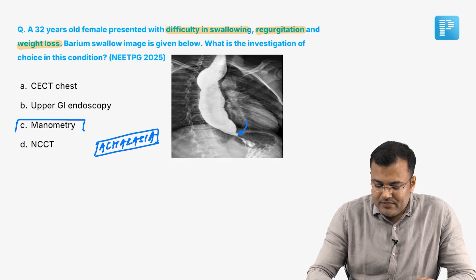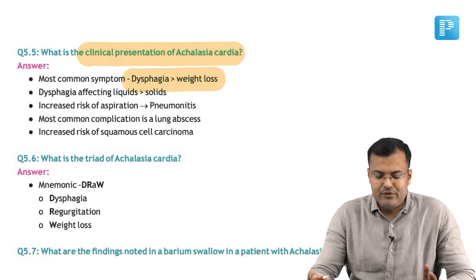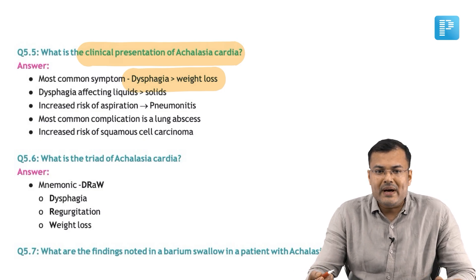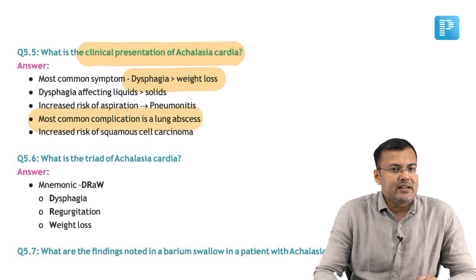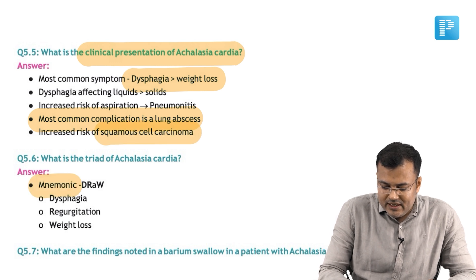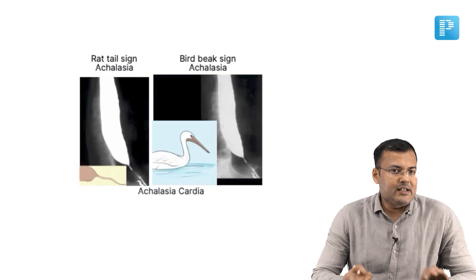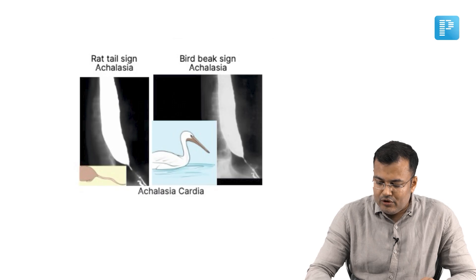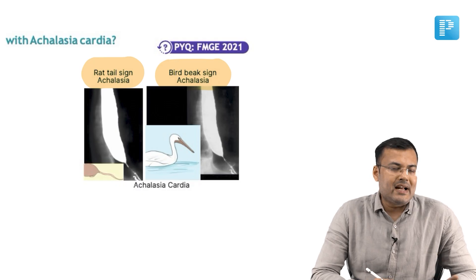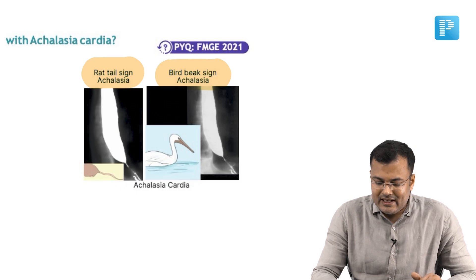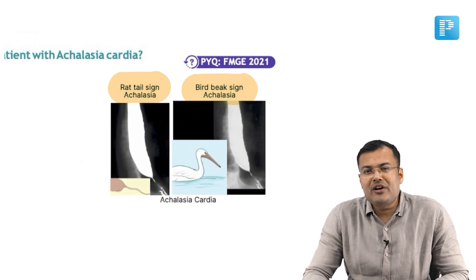See what is given in our notes. Clinical presentations of achalasia cardia: most common symptom is dysphagia followed by weight loss. Dysphagia is more common to liquids in comparison to solids. There is aspiration, which can cause pneumonitis, and the most common complication is lung abscess. There is increased risk of squamous cell carcinoma. The mnemonic is DRAW: dysphagia, regurgitation and weight loss. Barium swallow findings: rat tail sign, bird beak sign or pencil tip. Diagnosis for motility disorders is made on manometry.